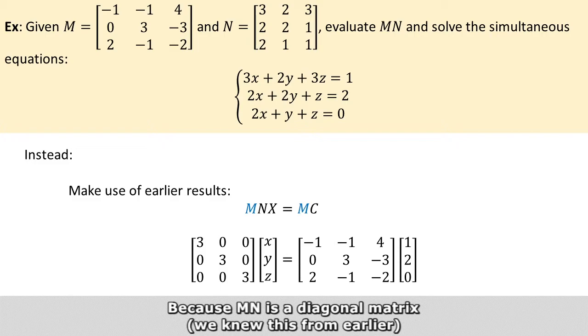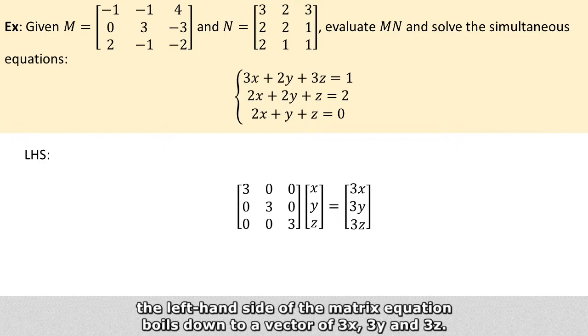Because MN is a diagonal matrix, the left-hand side of the equation simply boils down to a vector of 3x, 3y, and 3z.